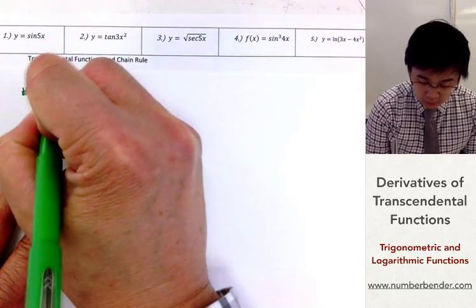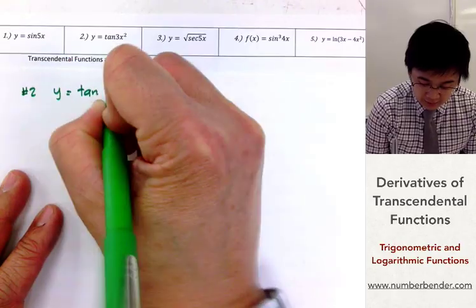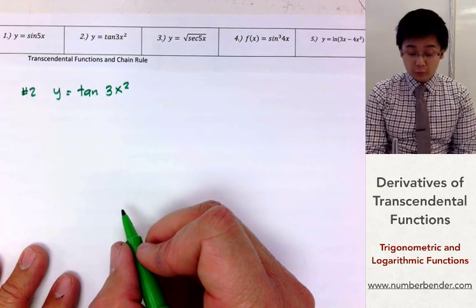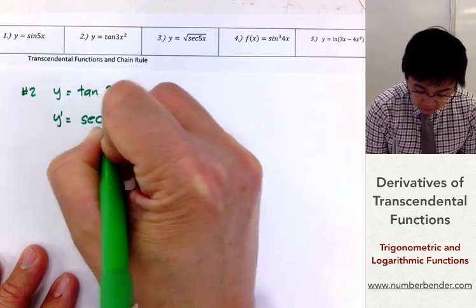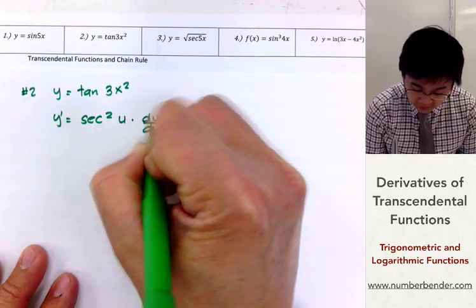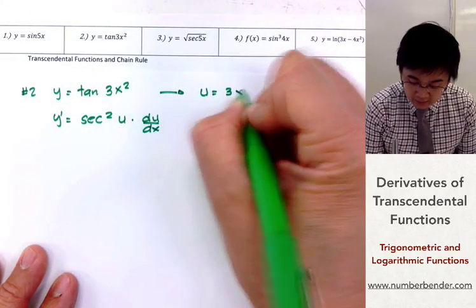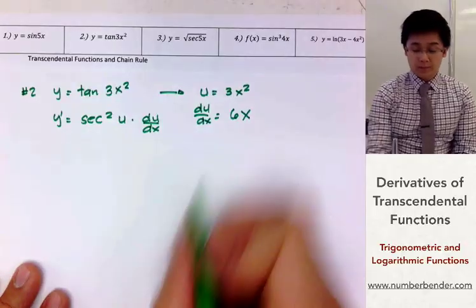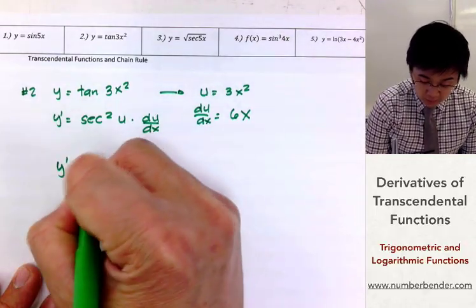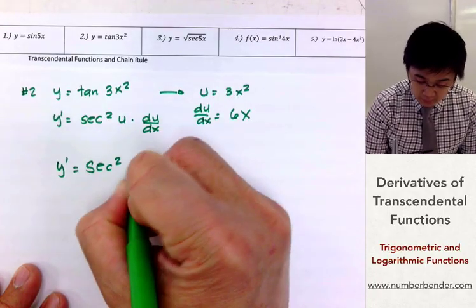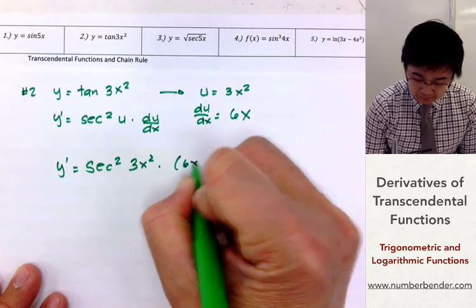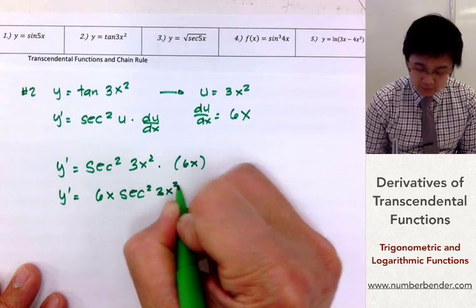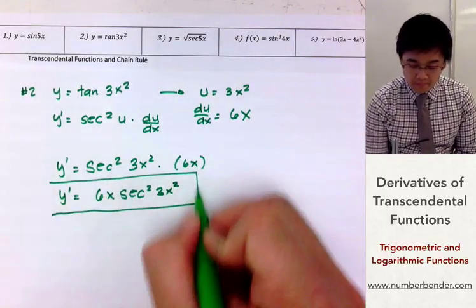In number two, we're looking for the derivative of tangent 3x squared. The derivative of tangent u is secant squared u times du/dx. We know that u is 3x squared and du/dx is 6x. So y prime is secant squared of 3x squared times 6x, or rewritten as 6x secant squared 3x squared.